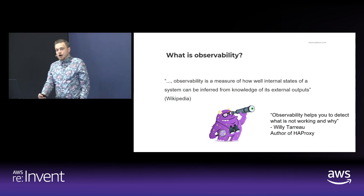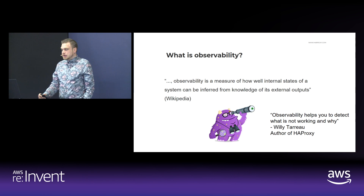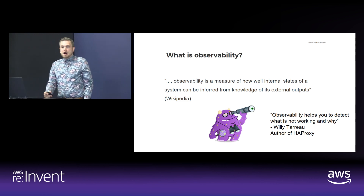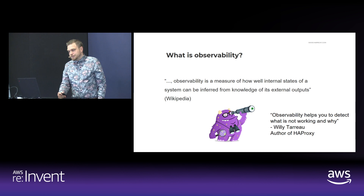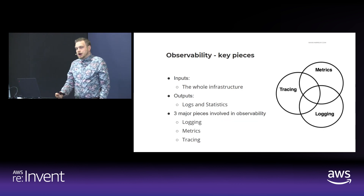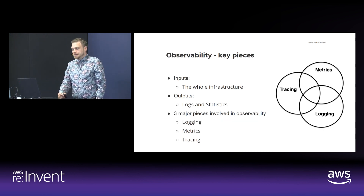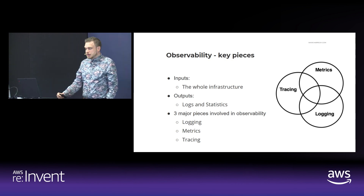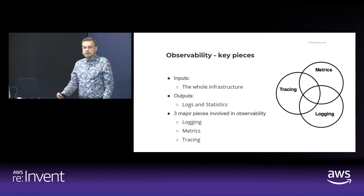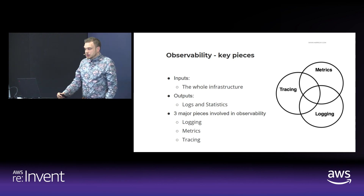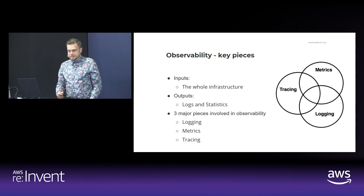Willy Tarot, the author of HAProxy, says that observability helps you to detect what is not working and why. When discussing observability, our inputs would be our whole infrastructure and our outputs would typically be logs and statistics or metrics. Three of the major pieces involved in observability would be logging, metrics, and tracing.